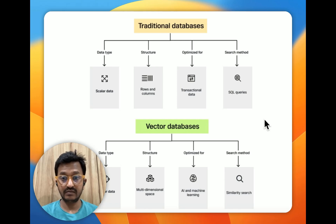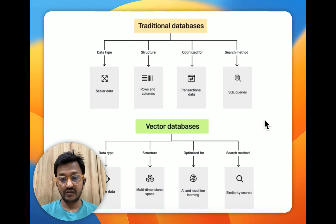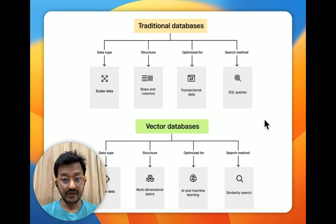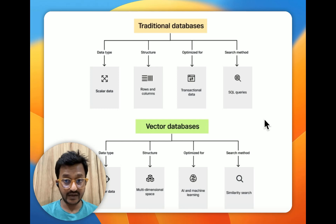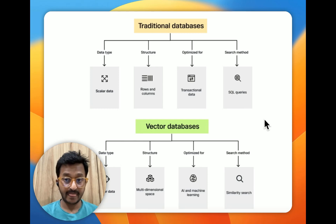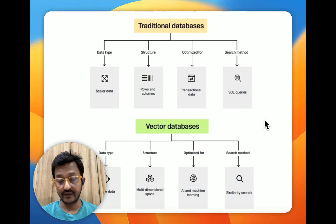Here's a simple diagram that differentiates vector databases from traditional databases. We are going to talk about four different concepts: data type, structure, what the database is optimized for, and the search method. In a traditional database, the data type is scalar data and the structure is rows and columns. It is basically optimized for transactional or analytical data, and the search method is through SQL queries.